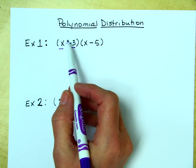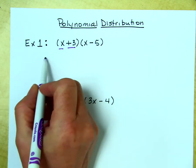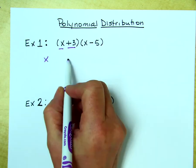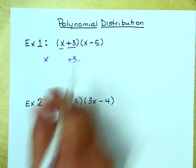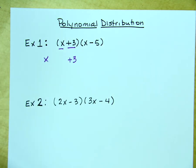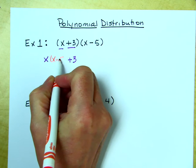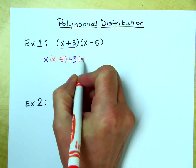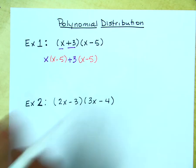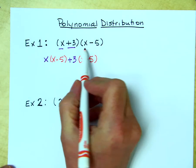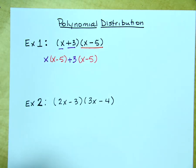Remember that every number has a sign and every sign has a number. So we're going to take the x and the plus 3 and split it up because each of those terms is going to be multiplied by the second binomial, the x minus 5. So this one right here gets multiplied by each of the terms in the first binomial. Now we distribute.